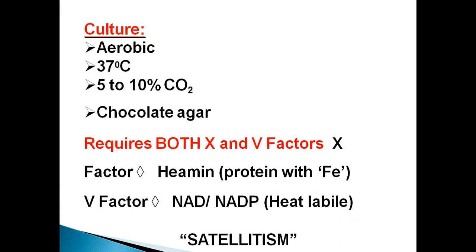When we heat blood agar, it changes into chocolate agar. After heating, the two factors — Factor X (tenth) and Factor V (fifth) — become easily available for the bacteria. Factor X is heme, which is a protein with iron.